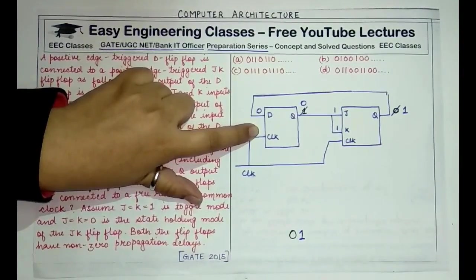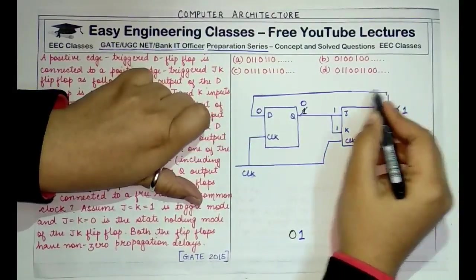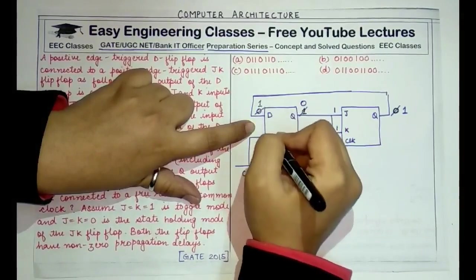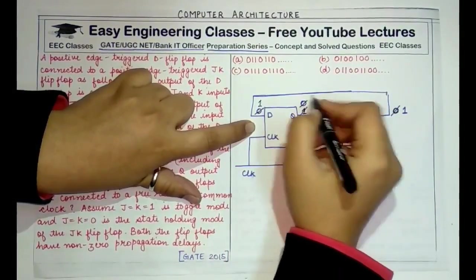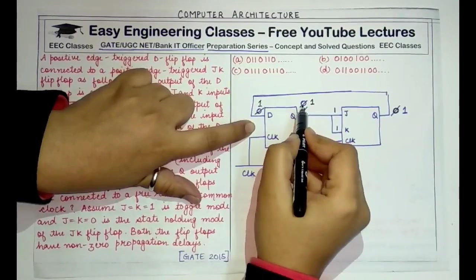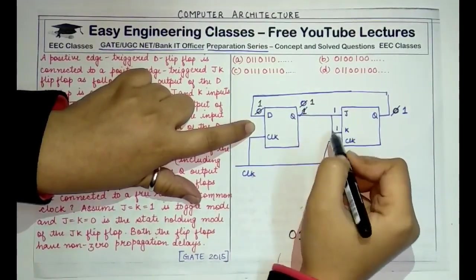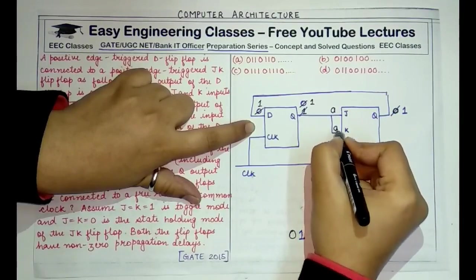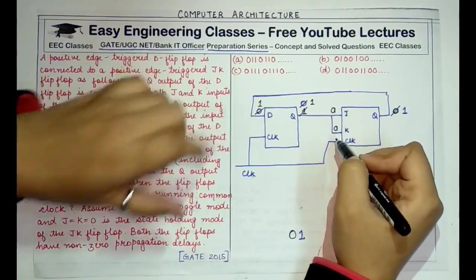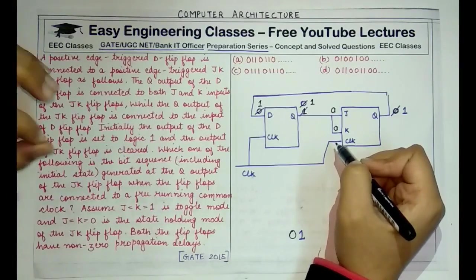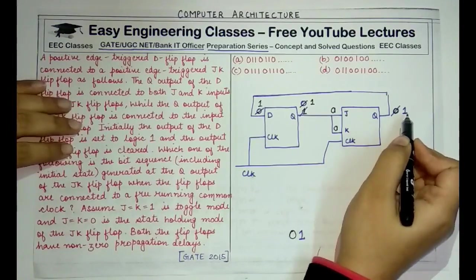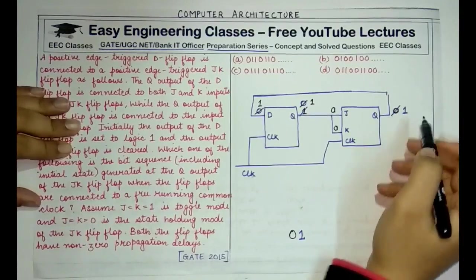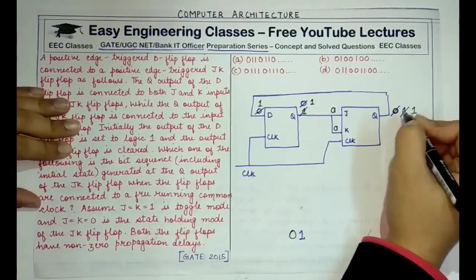In the next clock cycle, the 1 is transmitted to D, so the D flip-flop output becomes 1. But the previous 0 is transmitted to J and K inputs. Since J=K=0 is the state holding mode, the previous output of 1 is retained. So the output is 1 again.